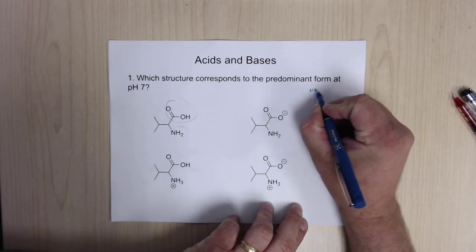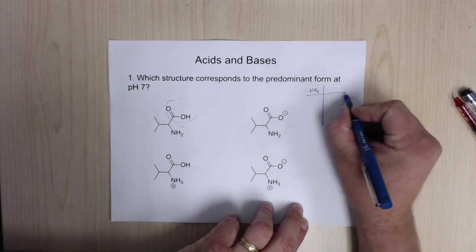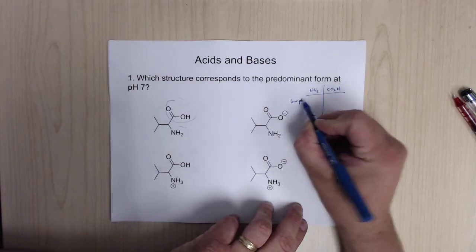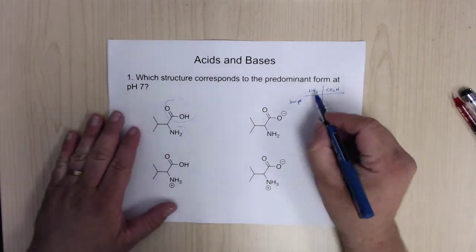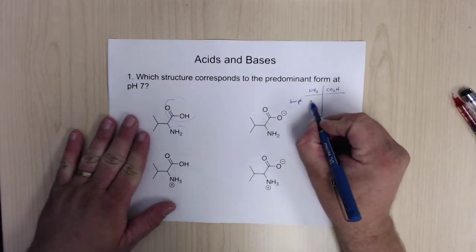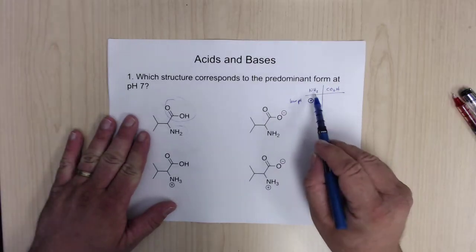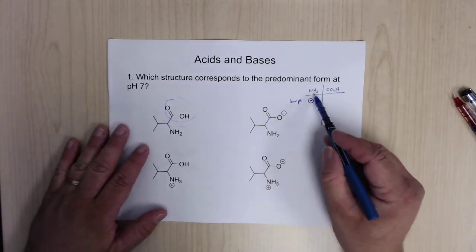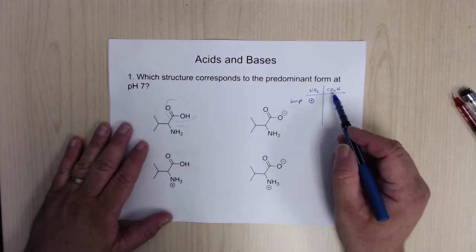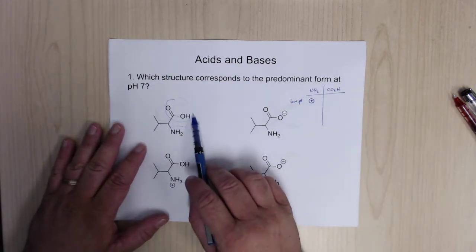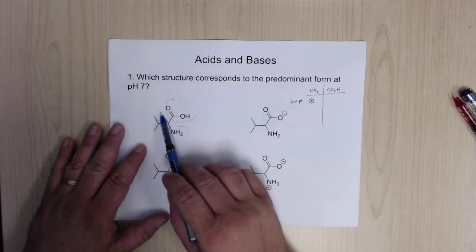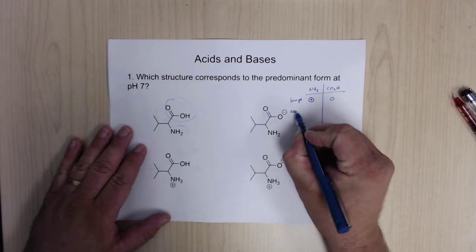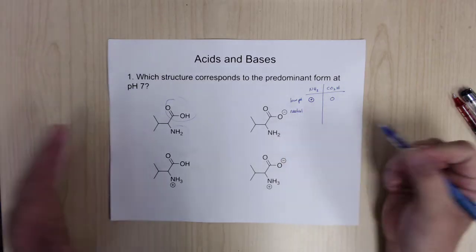At low pH, there are a lot of hydrogens around. The amine is going to pick up an extra hydrogen to give a positive charge. The carboxylic acid is also going to have a hydrogen shoved on it, so it gives an overall formal charge of zero.